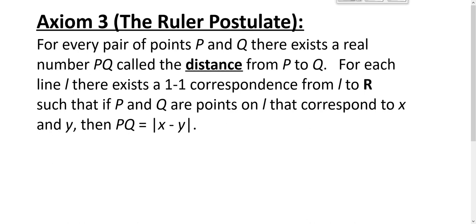Axiom 3 is called the ruler postulate. It reads: for every pair of points P and Q, there exists a real number PQ called the distance from P to Q. For each line L, there exists a one-to-one correspondence from the set of points on the line to the set of real numbers, such that if P and Q are points on L that correspond to x and y, then the distance PQ is equal to the absolute value of x minus y.